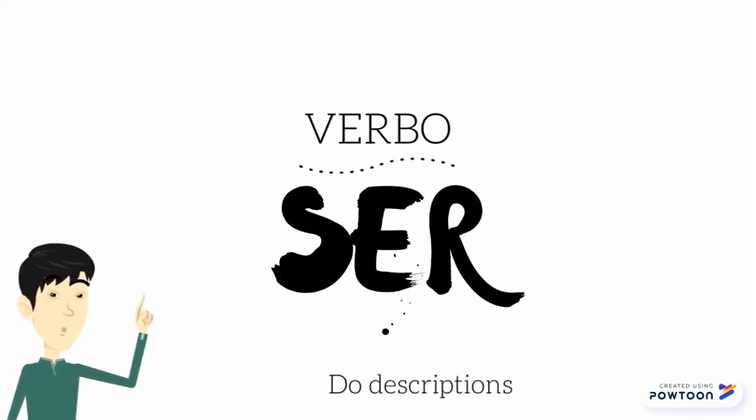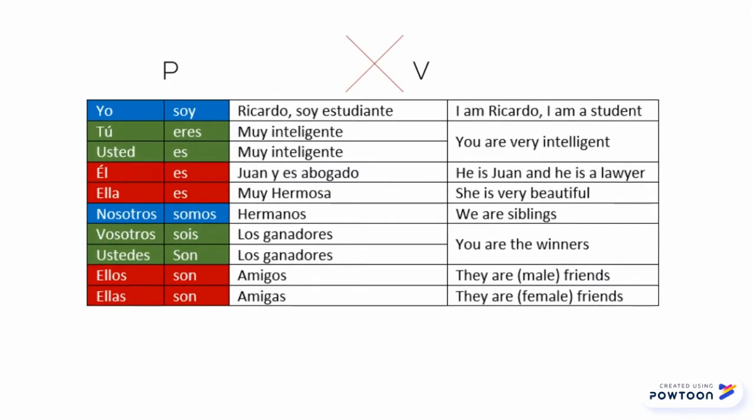Let's conjugate it in some examples. Yo soy Ricardo. Soy estudiante — I am Ricardo. I am a student. Tú eres muy inteligente, or usted es muy inteligente — you are very intelligent. Él es Juan y es abogado — he is Juan and he is a lawyer. Ella es muy hermosa — she is very beautiful. Nosotros somos hermanos — we are siblings.